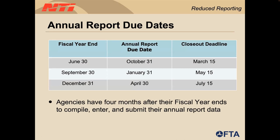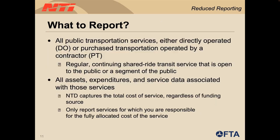Agencies have four months after their fiscal year ends to complete their NTD reports. For example, if your fiscal year ends on June 30th, the deadline for submission is October 31st and the report must be closed out or finalized by March 15th of the following year. We have three primary groups of fiscal year reporting deadlines listed here in the table.